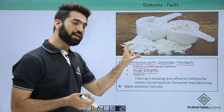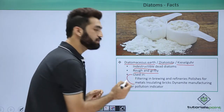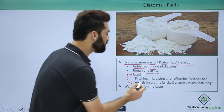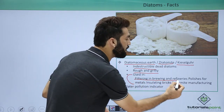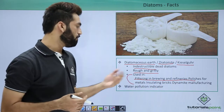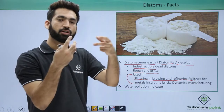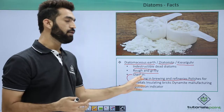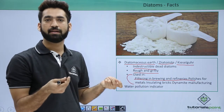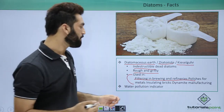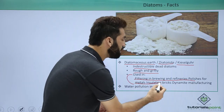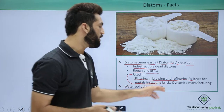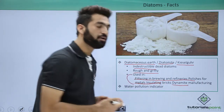Diatomaceous earth is used in various industries for various purposes. First, it is used as a filter in brewing and refinery industries. In the purification of antibiotics and syrups, we use diatomaceous earth so that we can filter easily. It is also used to manufacture metal insulating bricks, and we also manufacture dynamite out of it.